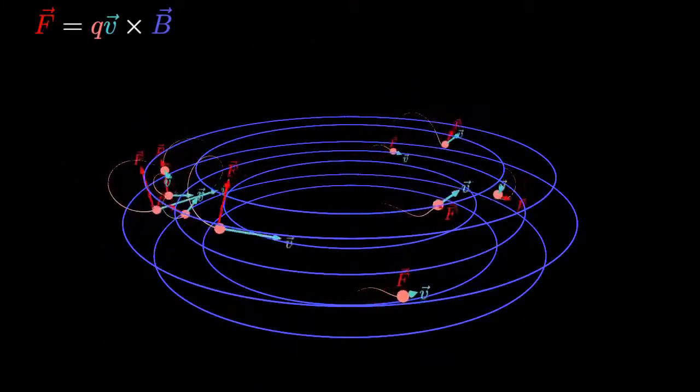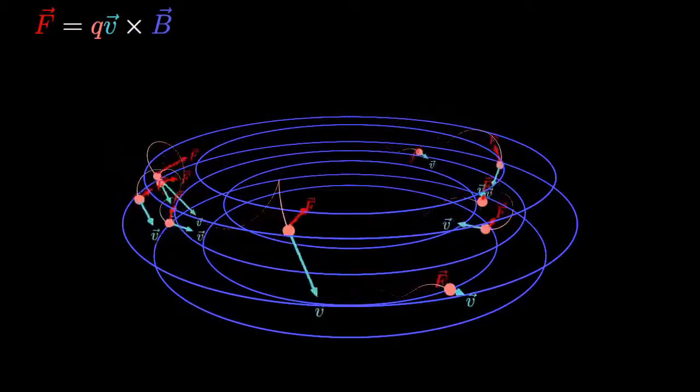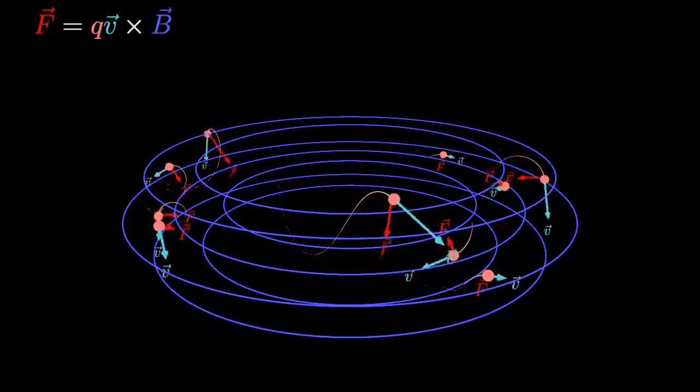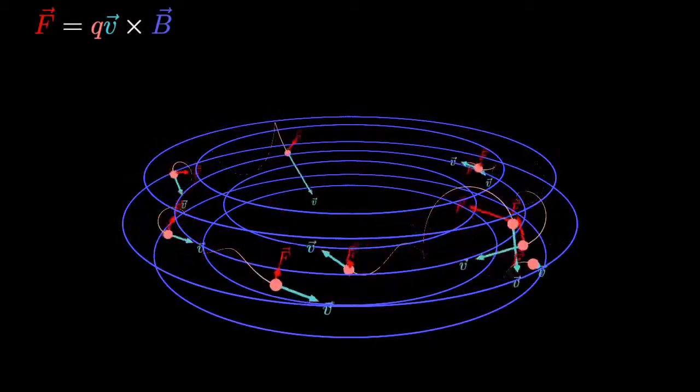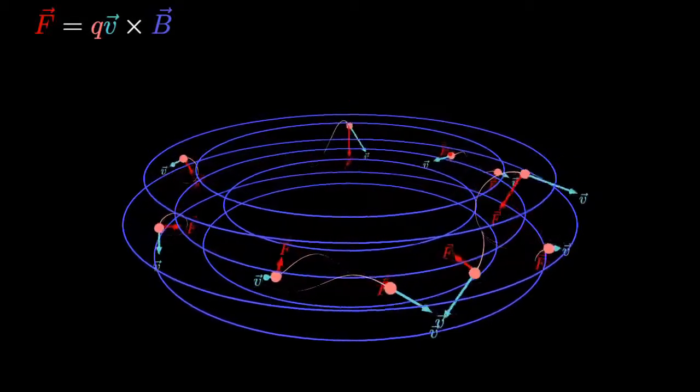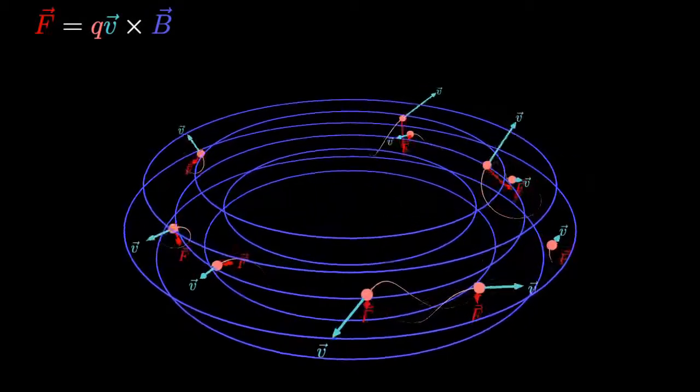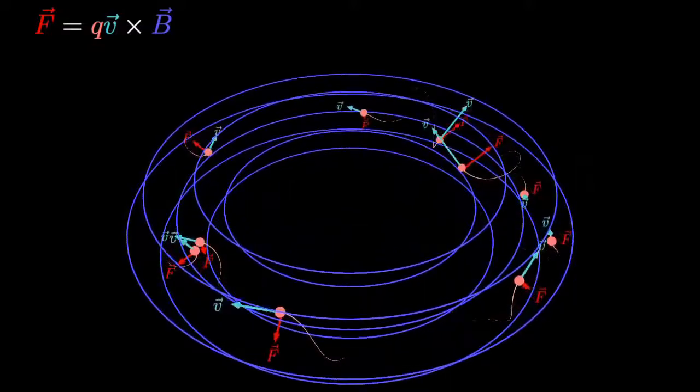A toroidal magnetic field can also trap charges by keeping the charges spiraling around the magnetic field lines. This is a simplified version of confinement used in plasma and nuclear fusion research projects like the International Thermonuclear Experimental Reactor.